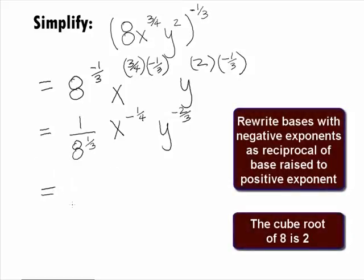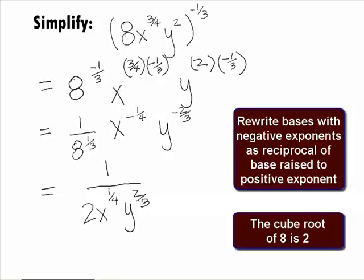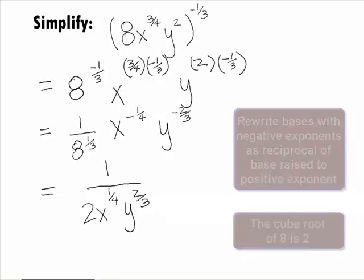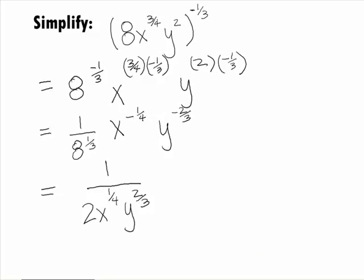Looks like we have some negative exponents here, so everything ends up in the denominator. Also, 8 to the 1 third can be simplified to be 2.